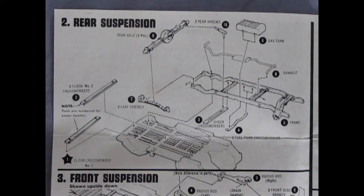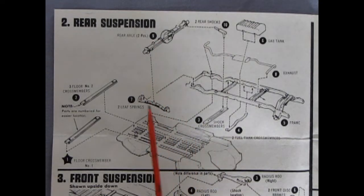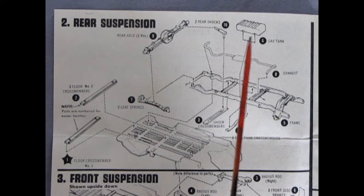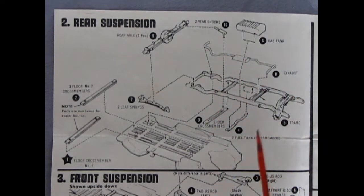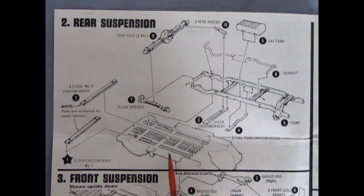Panel 2 shows our rear suspension going together, and here we have our differential as well as two leaf springs. We've got a nice full frame going on here with cross members being glued into place as well as an exhaust and a fuel tank, shock absorbers and then we have floor cross members as well, and this all goes down on this nice chassis pan.